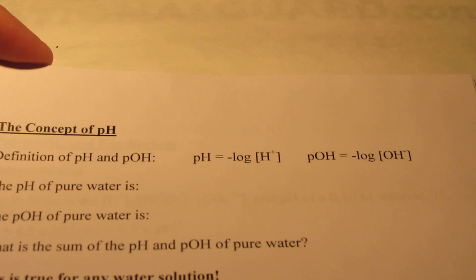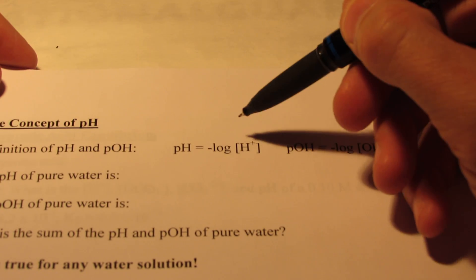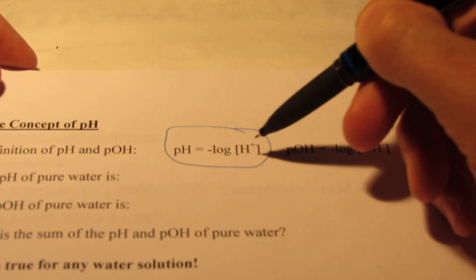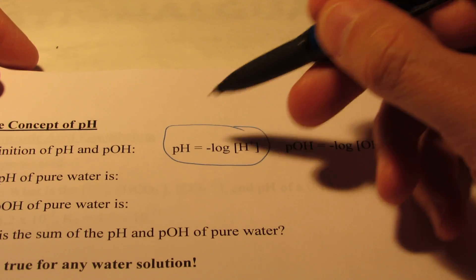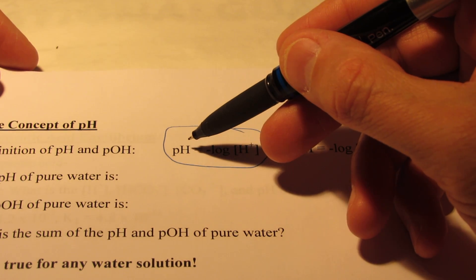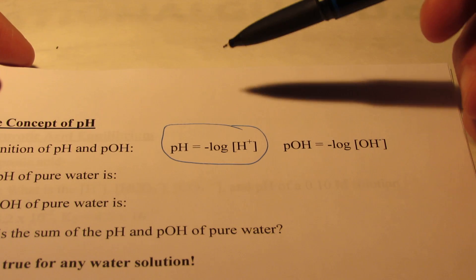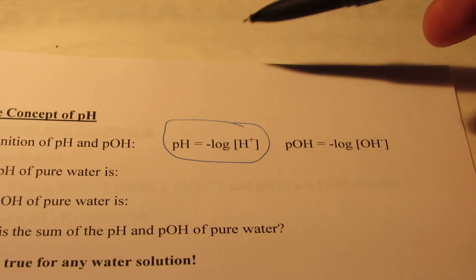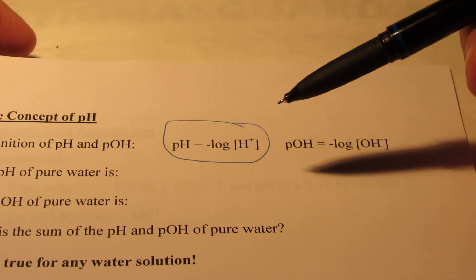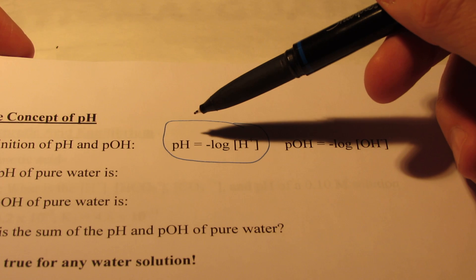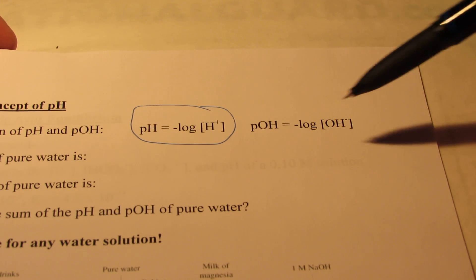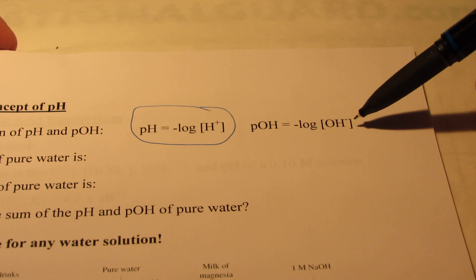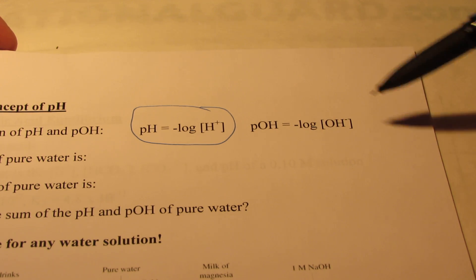Let's now talk about the concept of pH. The definition of pH is the negative log of the hydronium ion concentration. You probably have heard of pH — we use it a lot. You can measure the pH of shampoo, or the pH of your swimming pool water. There's also something called pOH, and that's the negative log of the hydroxide ion concentration.